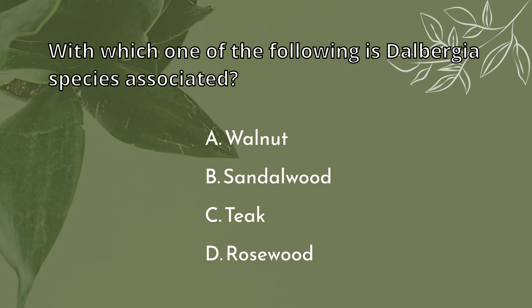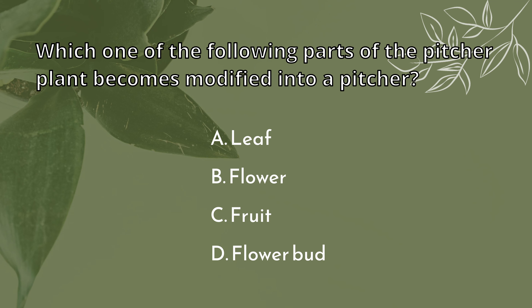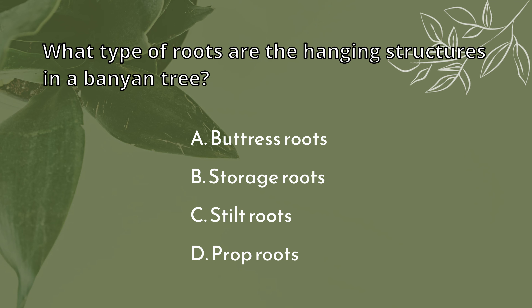With which one of the following is Dauberga species associated? Rosewood. Which one of the following parts of the pitcher plant becomes modified into a pitcher? Leaf. What type of roots are the hanging structures in a banyan tree? Prop roots.